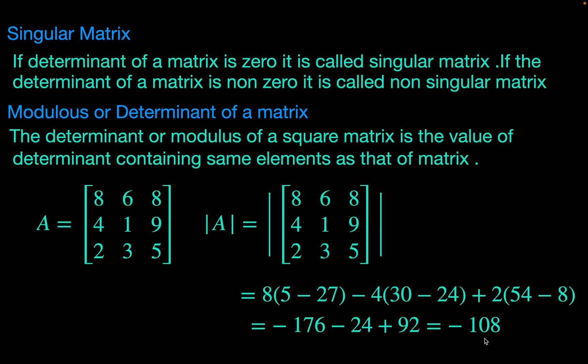In the next step we get the value as minus 176 minus 24 plus 92, which equals minus 108. Since this is a non-zero value, the matrix A is a non-singular matrix.